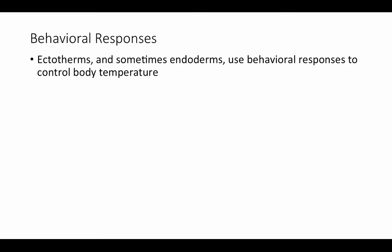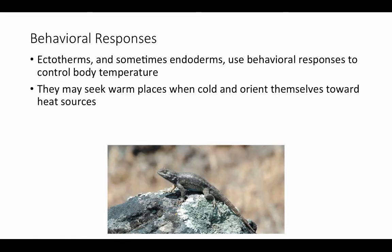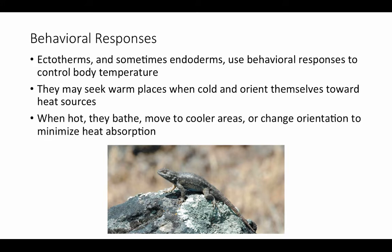Common to both endotherms and ectotherms — but primarily ectotherms — behavioral responses control body temperature. Animals may seek out warm places such as a rock exposed to sunshine that gives off radiant heat, and orient themselves toward heat sources, like basking in the sun. When hot, they might bathe, move to cooler areas, seek shade, or change their orientation to the sun to minimize heat absorption. Mammals can also use these behavioral approaches, but ectotherms rely on them almost exclusively.